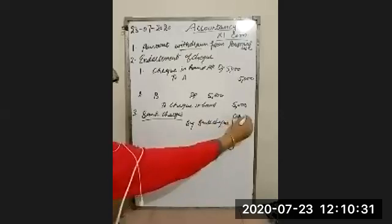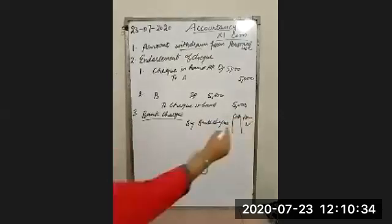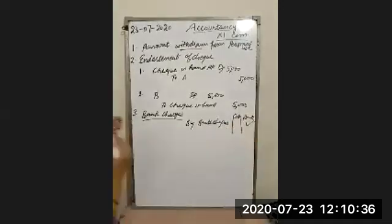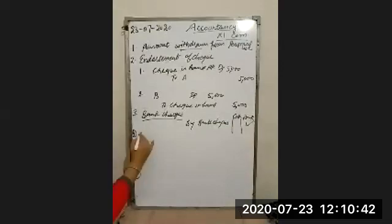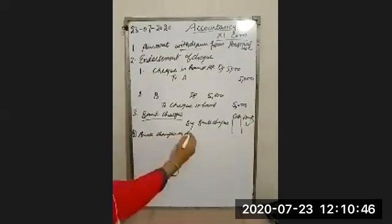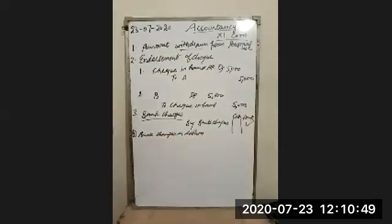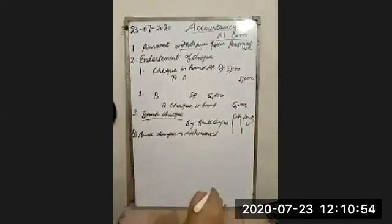You show it in the bank column. The next fourth point relates to bank charges on a dishonored check. If a check is dishonored, the bank may charge fees for that, and you similarly show that by bank in the bank column.